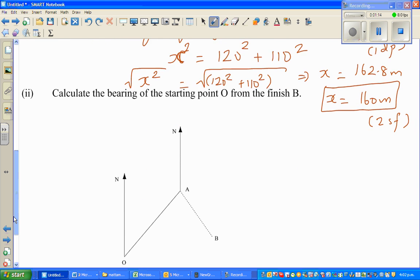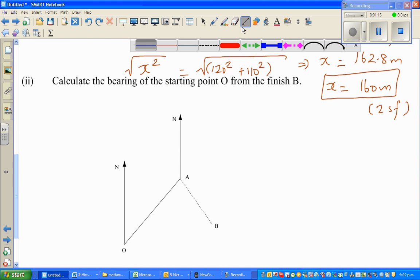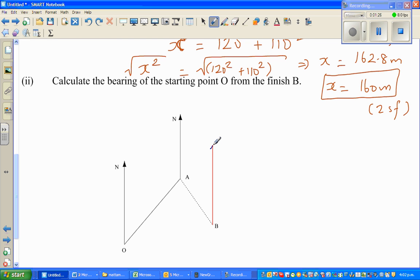This is my north from B. So first draw the north from B and you want to find the bearing of the starting point from the finish point B. So let me join it by a line segment, this is OB.